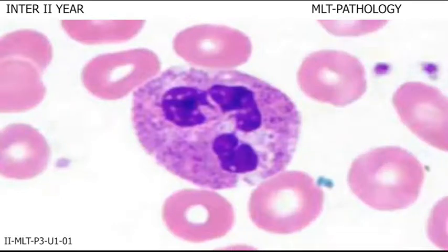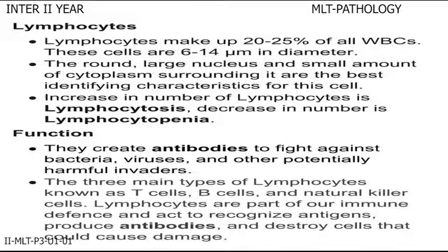This is the microscopic view of neutrophil. The nucleus is divided into four lobes; the lobes are sometimes more than four. Lymphocytes make up 20-25% of all WBCs. These cells are 6-14 micrometers in diameter. The large round nucleus and small amount of cytoplasm surrounding it are the best identifying characteristics of this cell. The increase in number of lymphocytes is called lymphocytosis and decrease in number is called lymphocytopenia. They create antibodies to fight against bacteria, viruses, and other potentially harmful invaders. They are of three types: B lymphocytes, T lymphocytes, and natural killer cells.